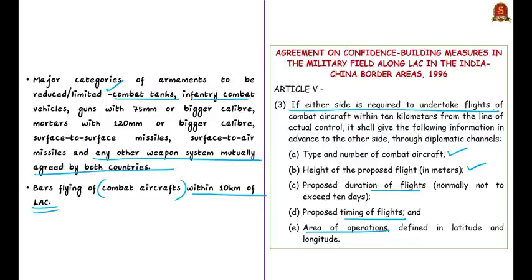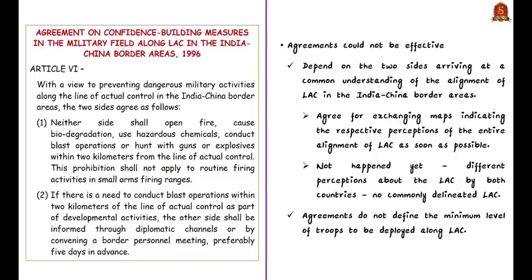This agreement gains importance because it prohibits certain dangerous military activities along the LAC. Both sides shall not open fire, cause biodegradation, use hazardous chemicals, conduct blast operations, or hunt with guns or explosives within 2 kilometers of the Line of Actual Control. Even if such activities have to be conducted, the other side shall be informed through diplomatic channels or by convening a border personnel meeting. The agreement prohibits almost all activities which could lead to another war between the countries.